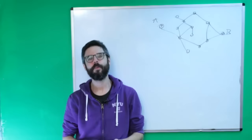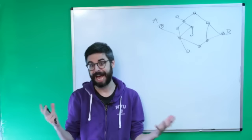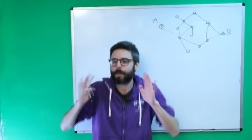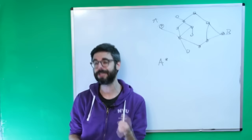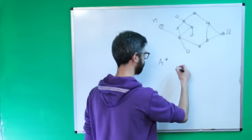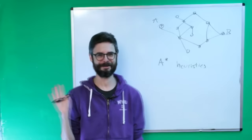Dijkstra's is an algorithm that looks at every possible path and tries to find the optimal one. It works and will find you the optimal one, but it's not super efficient. If there are thousands of nodes it takes a really long time. The A-Star algorithm is very similar to Dijkstra's, but it uses a concept known as heuristics.